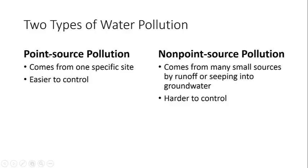Let's first start with point source pollution. Point source pollution comes from one specific site, and it's easier to control. So for example, an oil spill from one specific site could cause much of the Atlantic Ocean to be polluted. Non-point source pollution comes from many small sources by runoff or by seeping into groundwater. It's a lot harder to control because it's coming from many places.